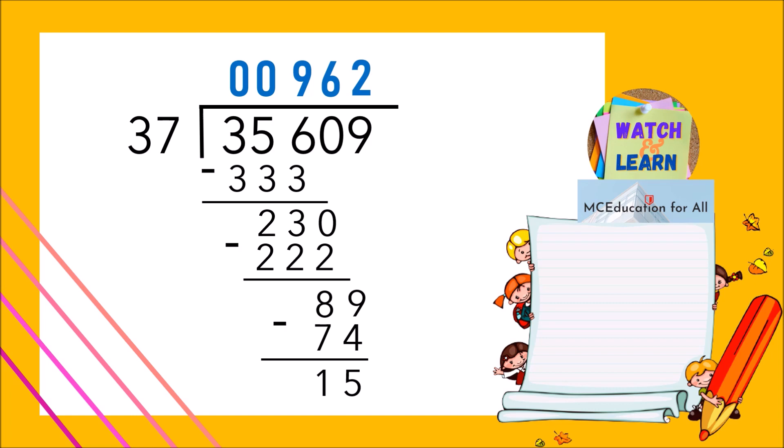No more numbers to bring down? Therefore, the quotient of 35609 divided by 37 is 962 remainder 15.